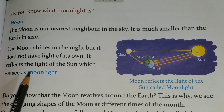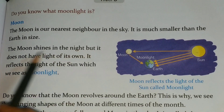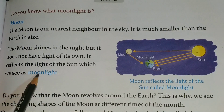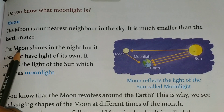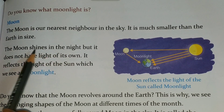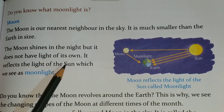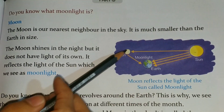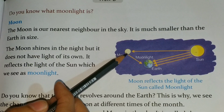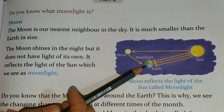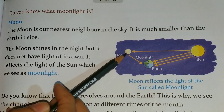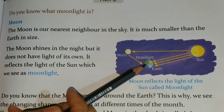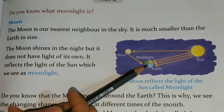The moon shines in the night, but it does not have light of its own. It reflects the light of the sun, which we see as moonlight. Have a look at this picture — you can see the sun, the moon, and the Earth. The sun is giving light to the moon, and the moon reflects the light of the sun back to Earth. We call this moonlight.